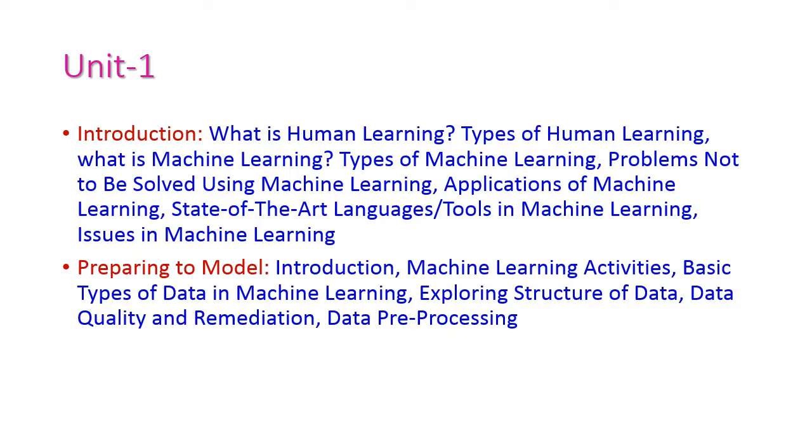Before that, let us see the topics that will come under first unit. There are two chapters. First one is Introduction. In the introduction chapter, the topics are: what is human learning, types of human learning, what is machine learning, types of machine learning, problems not to be solved using machine learning, applications of machine learning, state of the art languages and tools in machine learning, and issues in machine learning.